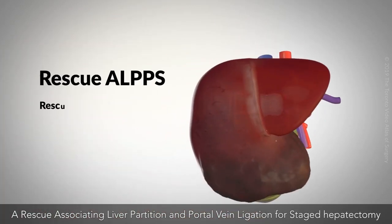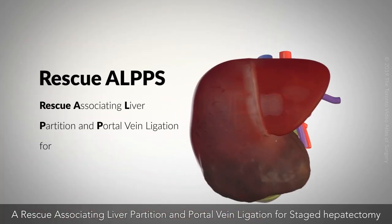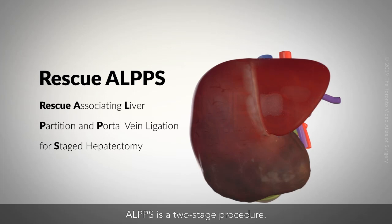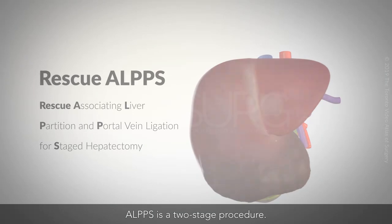A rescue associating liver partition and portal vein ligation for staged hepatectomy (ALPPS) is therefore planned to further promote growth of the FLR. ALPPS is a two-stage procedure.